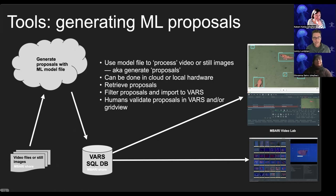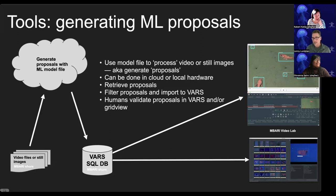Once we have a model weight, we can send video or still images up to the cloud and process them using that machine learning model. We can also do that on local hardware. We basically generate machine learning proposals — in our case, these are actually tracks because we use tracking to follow things through space and time. We filter those so each track is reduced to the best observation of that animal, then import that into VARS, giving us one observation per track.